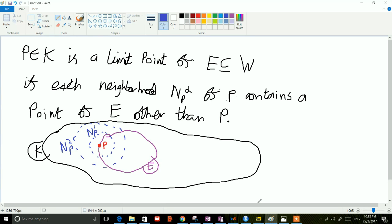So I've tried to draw this on a diagram. You see in black I've drawn K—K is the underlying ambient space, if you like. And then we have this subset E of K, and we're interested in whether P is a limit point of that space or not.